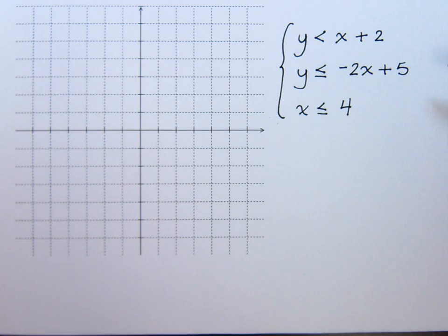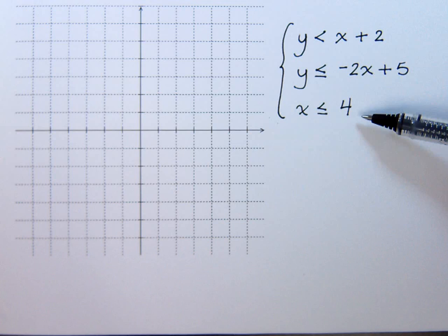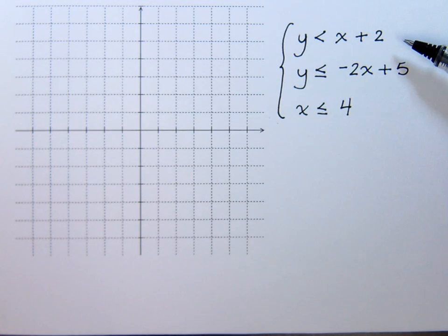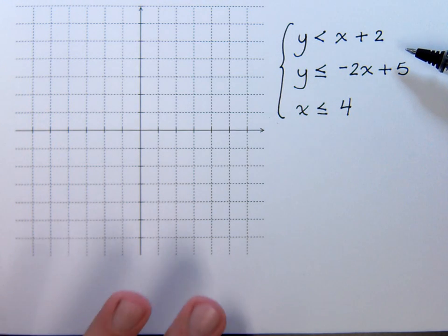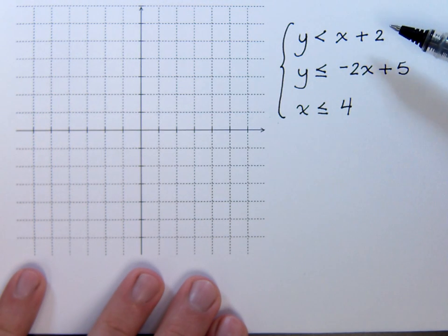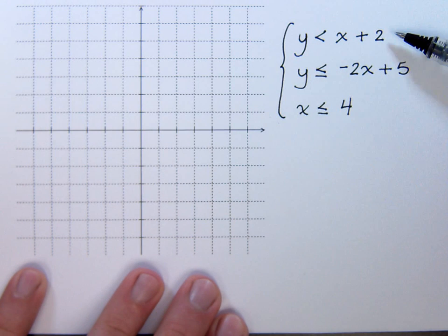In this system of linear inequalities, we have three inequalities listed. Now some of these could have been non-linear, but I just chose all of them to be linear for this example. What we need to find out is the intersection for not just these two, but for all three of them together.